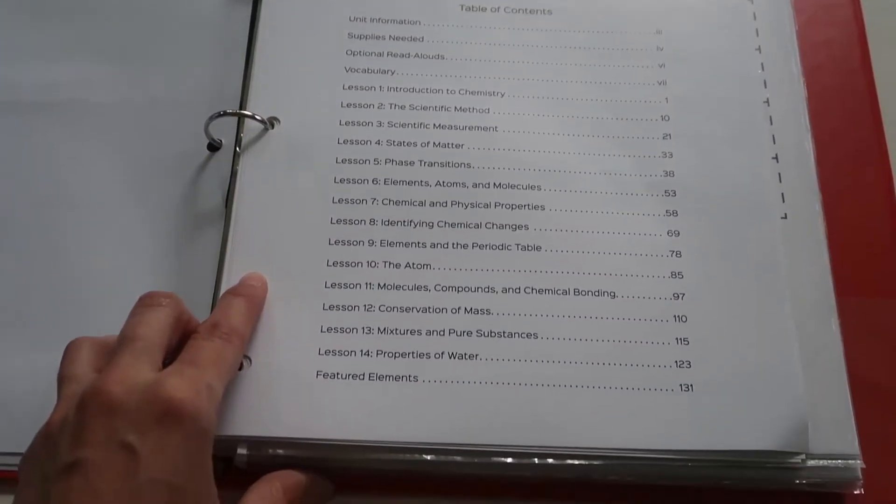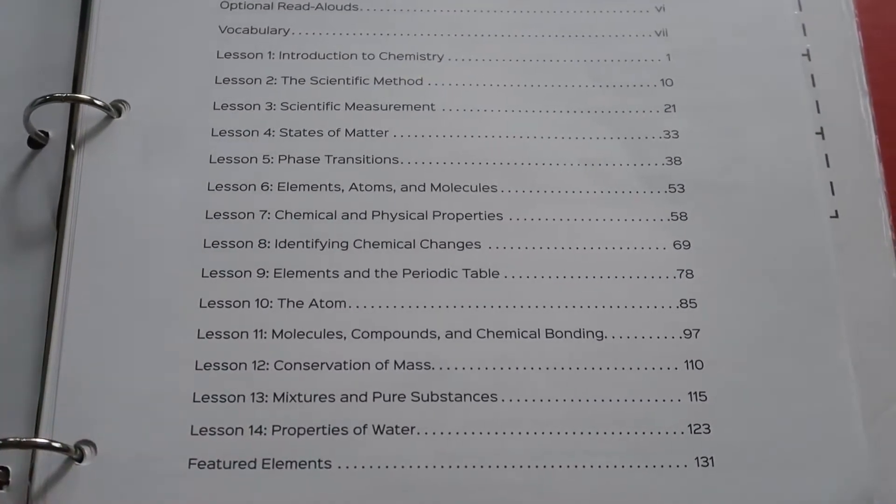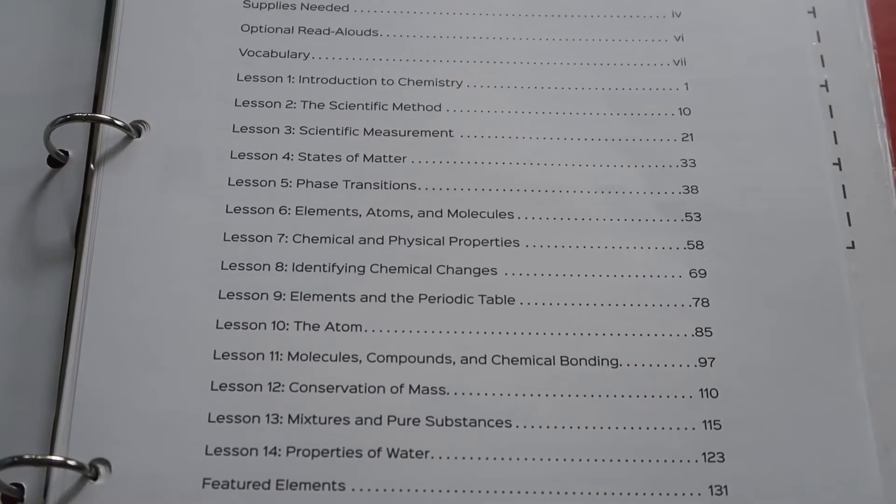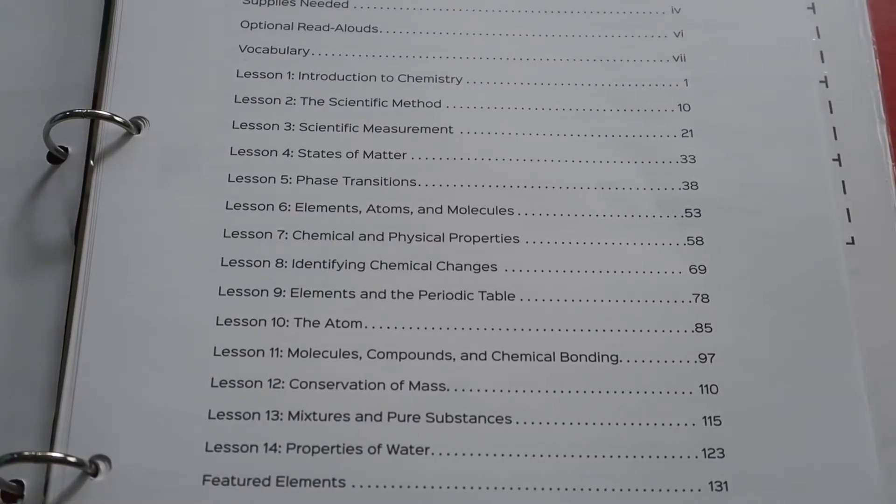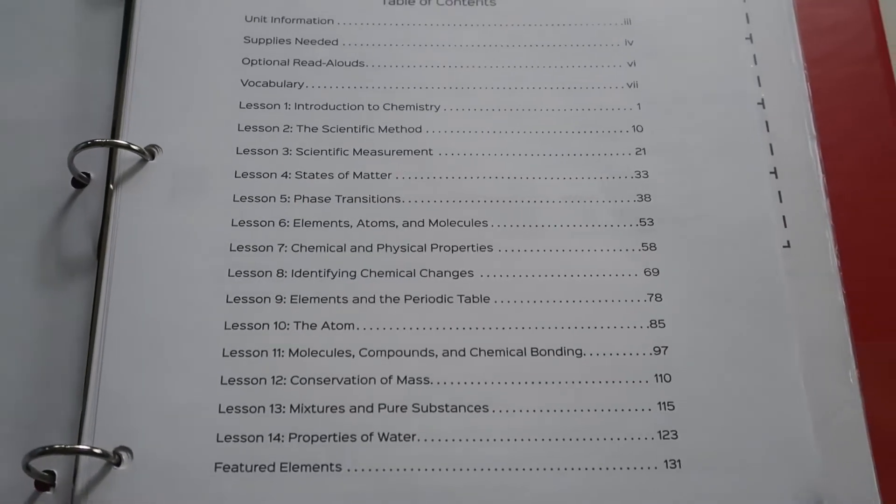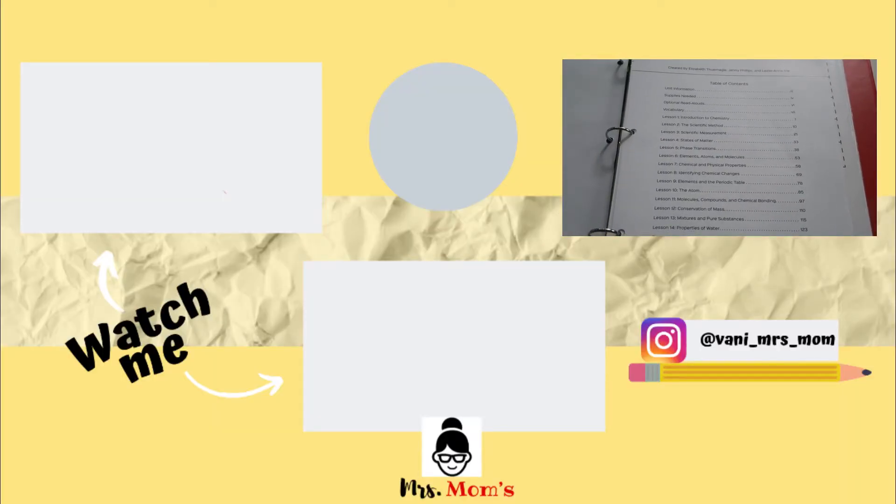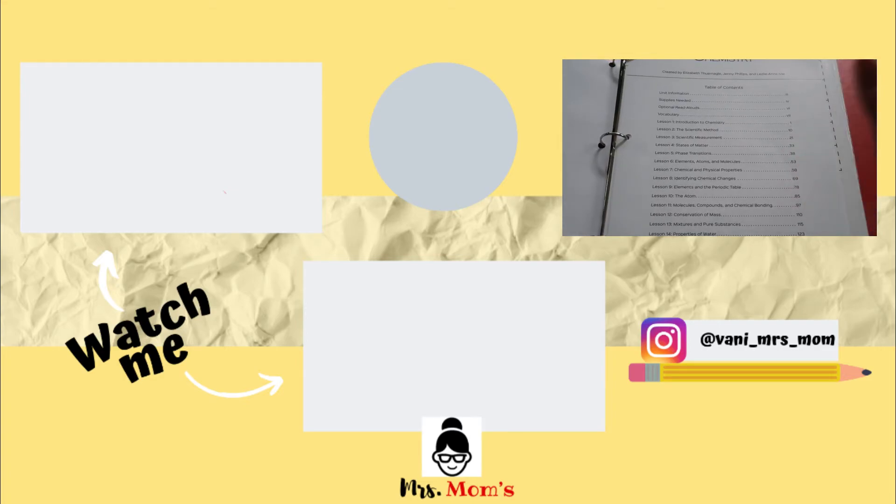So there's 14 lessons in this and if you're doing two lessons a week, you can finish this in seven weeks. You could do five lessons a week and get it done faster. It's really up to you. They recommend the science be done twice a week in homeschooling period. Usually you do science twice a week and then history twice a week, but it's all up to you. So that's it.